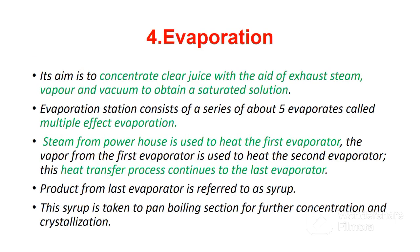The fourth stage of sugarcane processing is evaporation. The main aim of this stage is to concentrate clear juice with the aid of exhaust steam, vapor, and vacuum to obtain a saturated solution. The evaporation station consists of a series of about five evaporators called multiple effect evaporation. Steam from the powerhouse is used to heat the first evaporator. The vapor from the first evaporator is used to heat the second evaporator, and this heat transfer process continues to the last evaporator. The product from the last evaporator is referred to as syrup, which is taken to the pan boiling section for further concentration and crystallization.